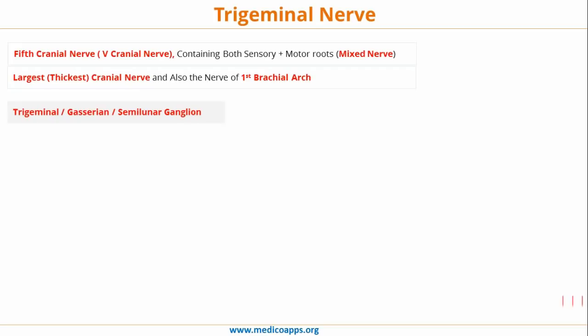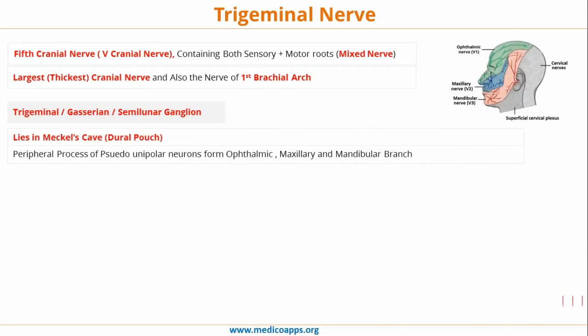The trigeminal ganglion is also called the Gasserian or semilunar ganglion. It lies in Meckel's cave, or the dural pouch. Peripheral processes of the pseudo-unipolar neurons from the ophthalmic, maxillary, and mandibular branches all end up in the trigeminal ganglia.